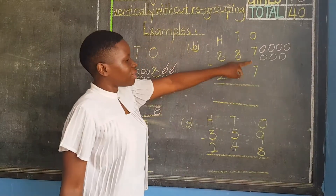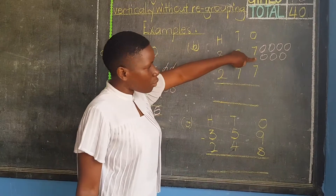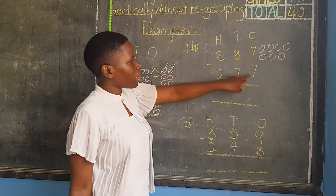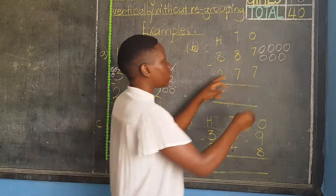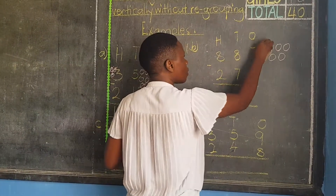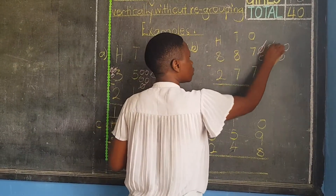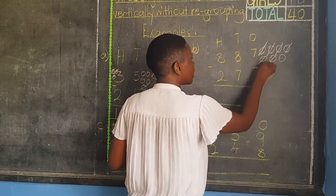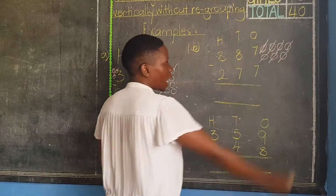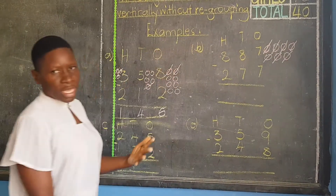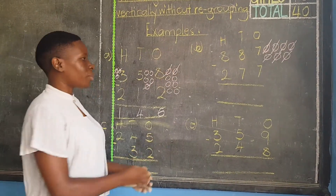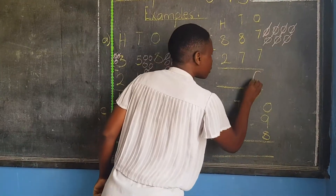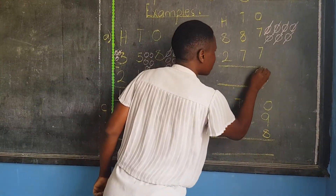We say seven, take away seven. Out of these seven balls, how many am I supposed to cancel? They are seven. We count one through seven. How many have I remained with? I have remained with zero. I write my zero there.